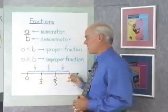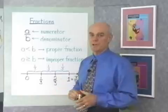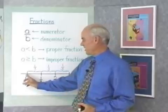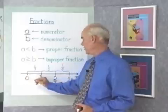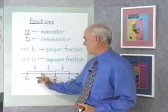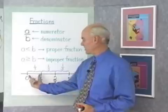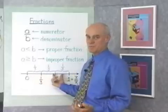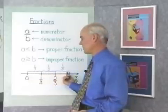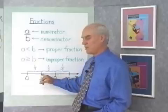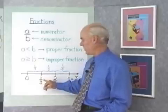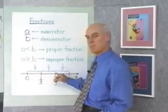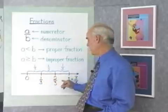We can visualize fractions a number of different ways. One way is to visualize them on the number line. If I take the section of the number line that goes from 0 to 1 and divide it up into 3 equal segments, each of those segments is 1/3 of the distance from 0 to 1. So this point right here on the number line would have a coordinate of 1/3. This would be 2 of those line segments, so that point would have a coordinate of 2/3.